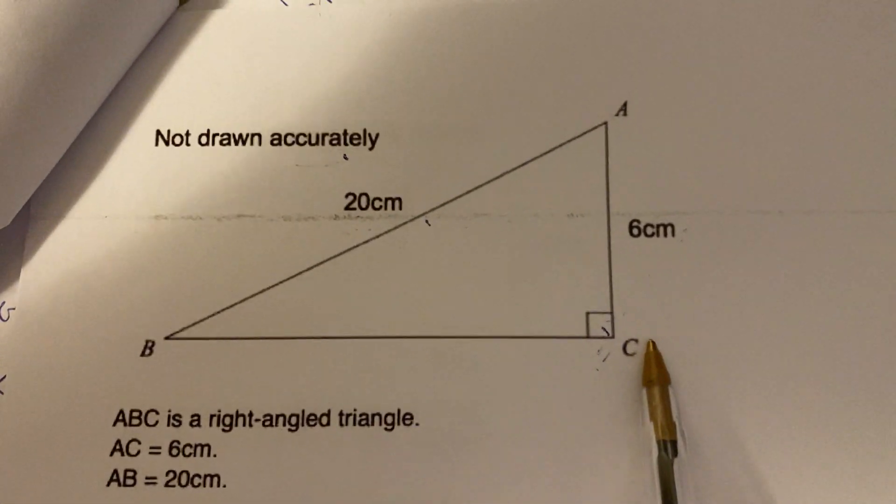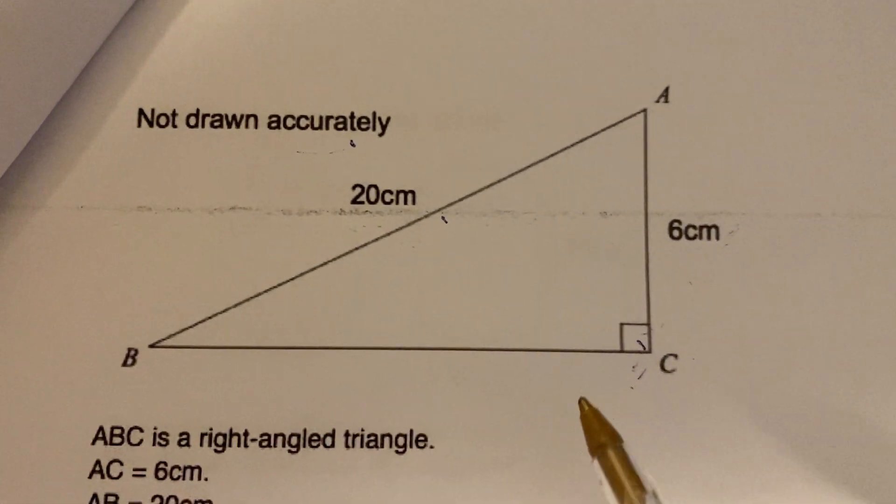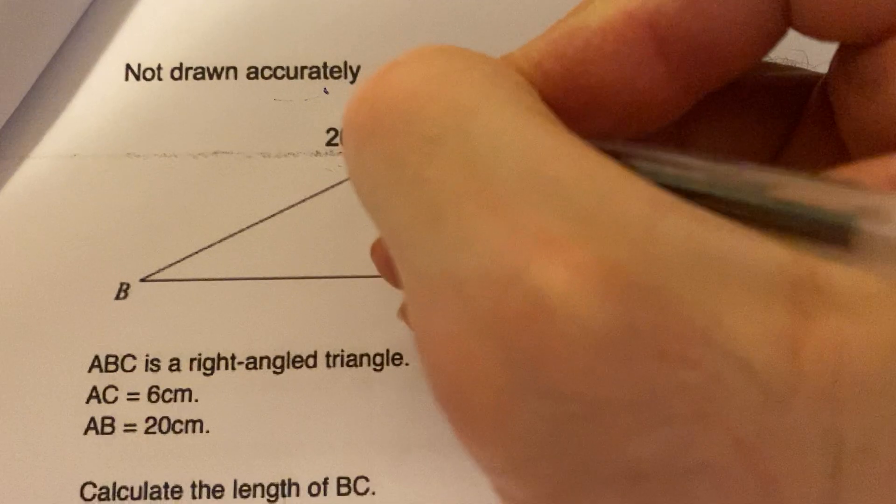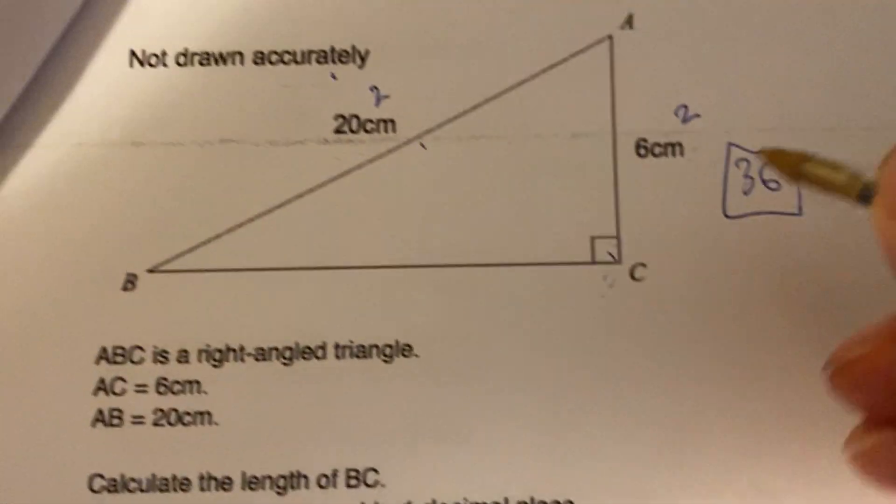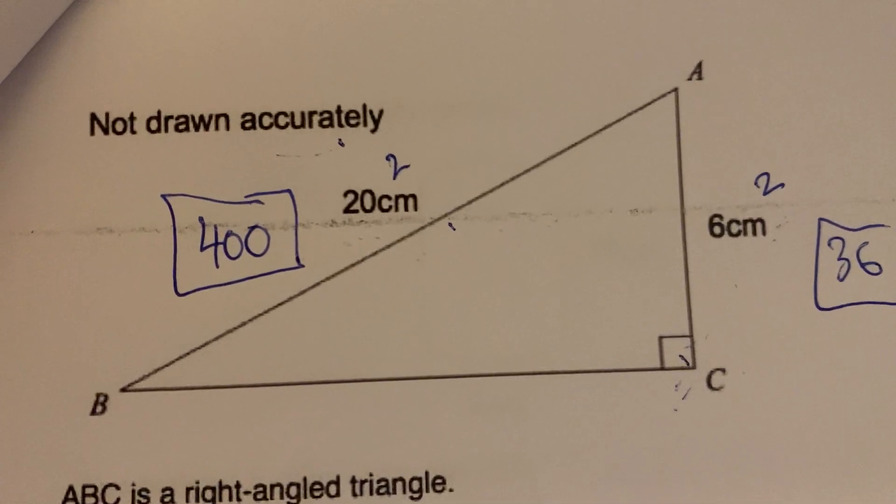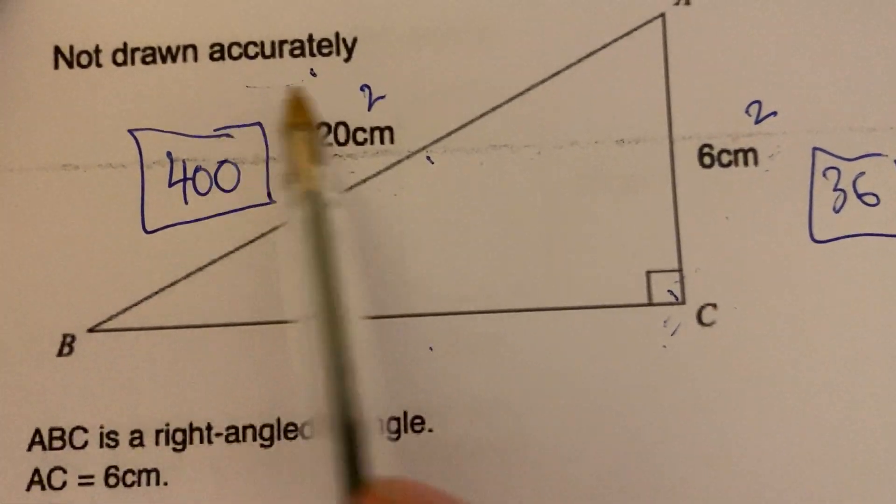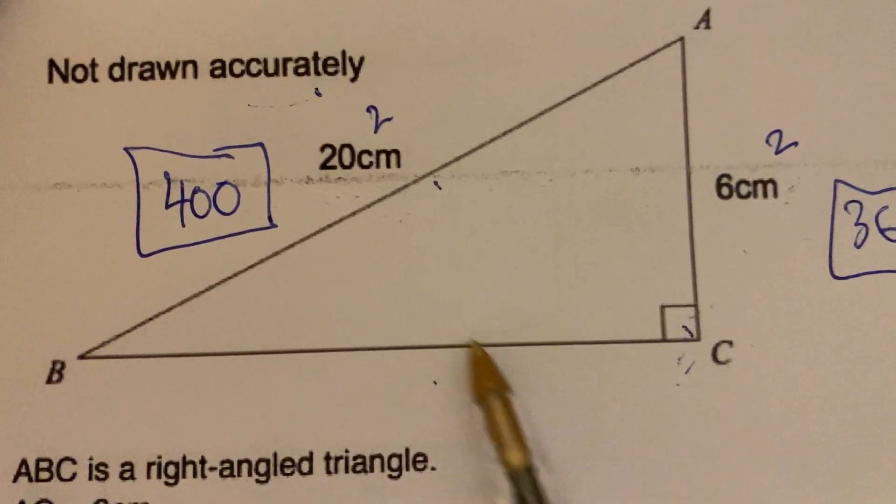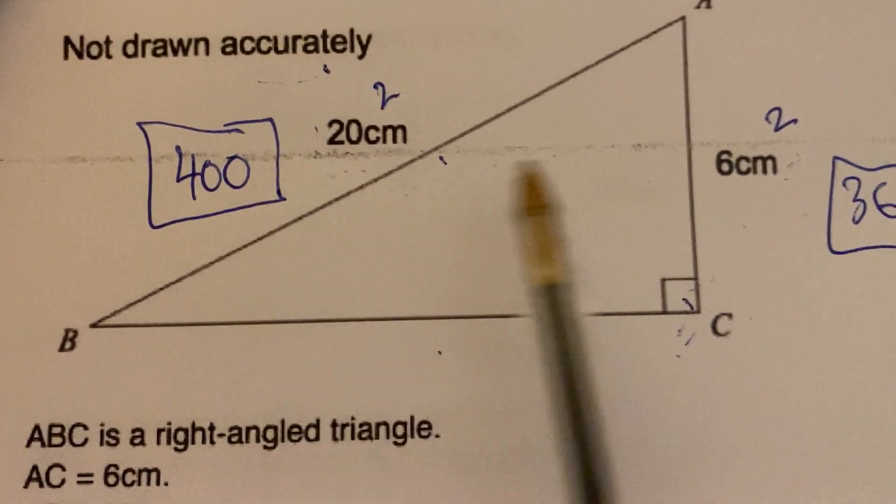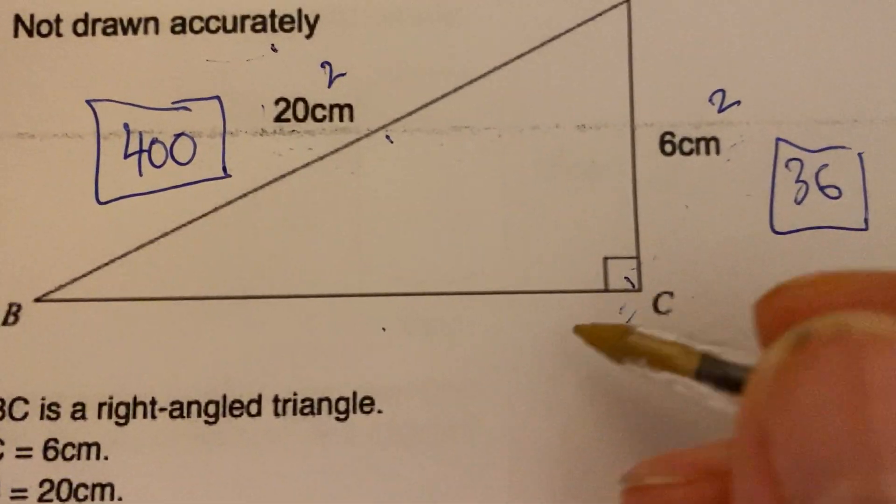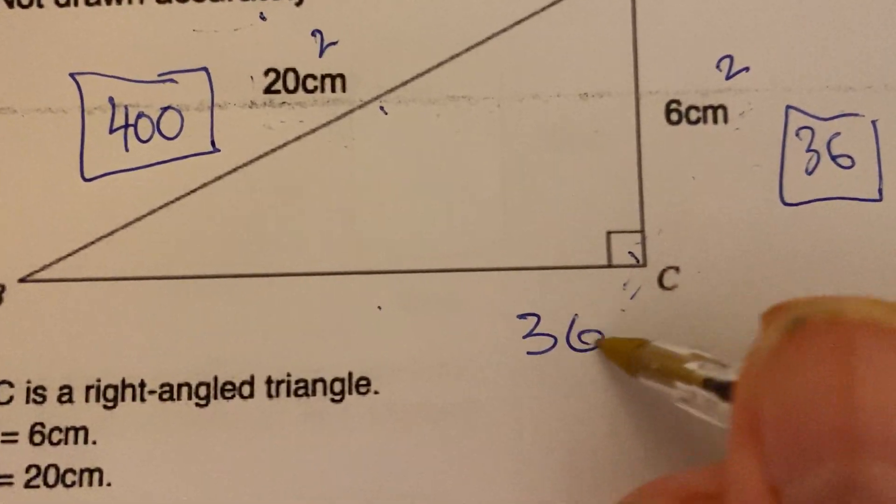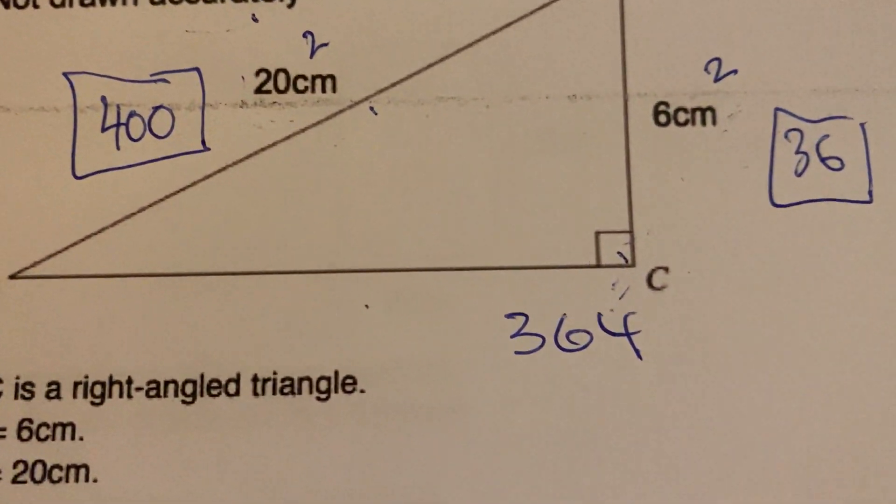It says calculate BC. Okay, so I don't care about angles, I've just got two lines, so it's going to be Pythagoras. Square and square: that's 36 in a box. 20 times 20 on your calculator is 400. I want a shorter side, so I've got to do a difference. If I wanted a longer side I'd add, but I want the shorter side, so I'm going to do 400 take away 36, so that's 364.